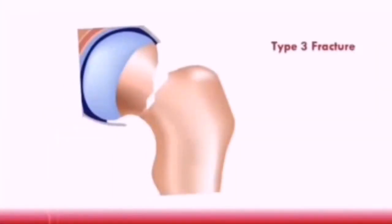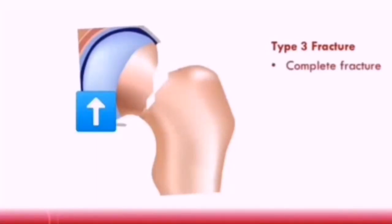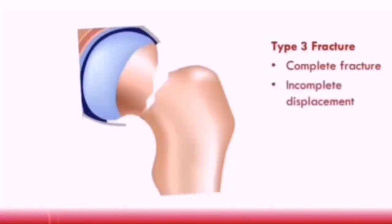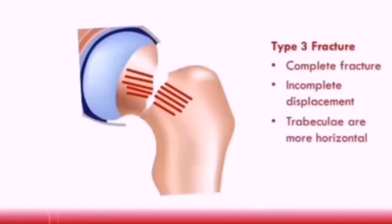A Garden's type 3 fracture is a complete fracture where the head of the femur is tilted. There is displacement, but it is not complete — so there is incomplete displacement. The trabeculi of the fractured bone become aligned more horizontally. There is a high risk of avascular necrosis with a type 3 fracture because it is a complete fracture with displacement.